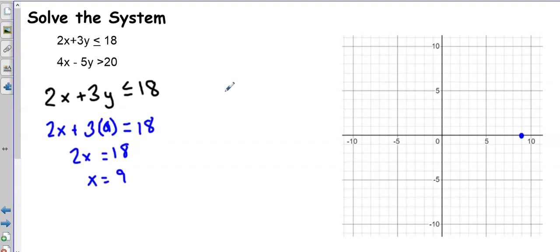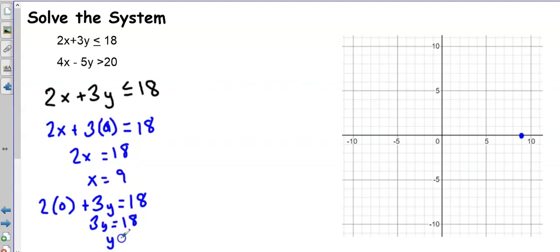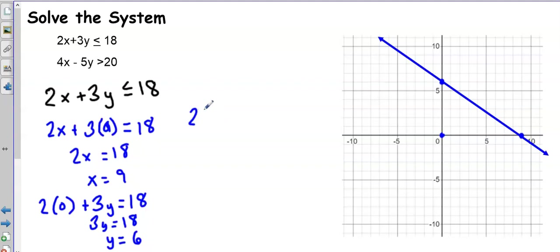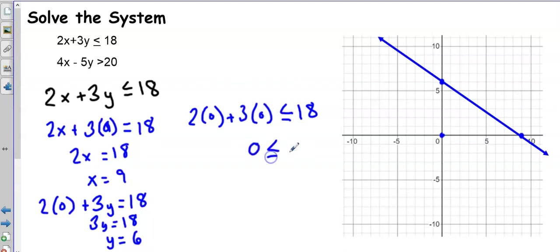For the y-intercept, I set x = 0: 3y = 18, so y = 6. I'll plot that at (0, 6). Since this inequality has ≤, I draw a solid line through these two points. To determine the shading, I use test point (0, 0): substituting gives 0 ≤ 18, which is true, so I shade the region containing (0, 0).